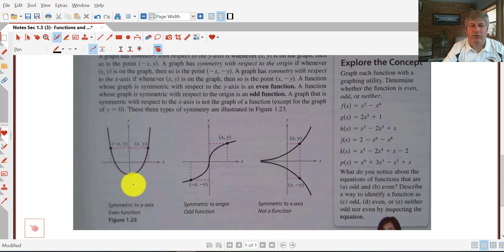Okay, we have this axis of symmetry is the y-axis, and then symmetric to the origin is an odd function. So this is an example. It's symmetric across the origin. So between the first and the third quadrant or the second and the fourth quadrant, it's going to be symmetrical.